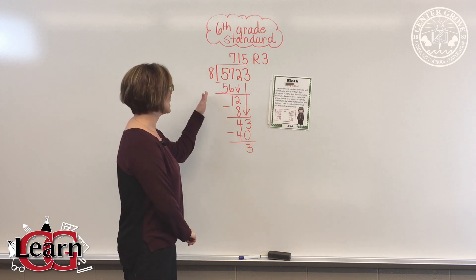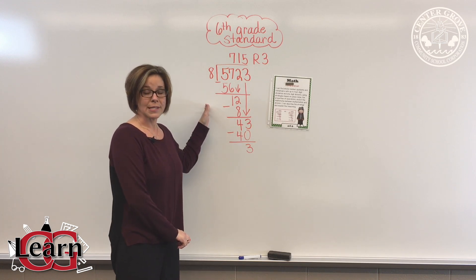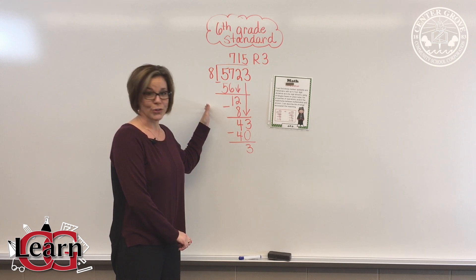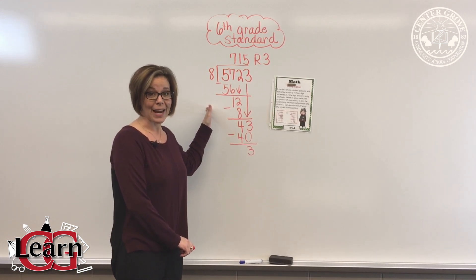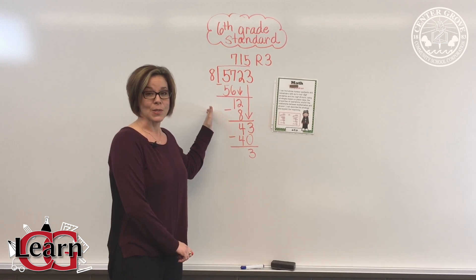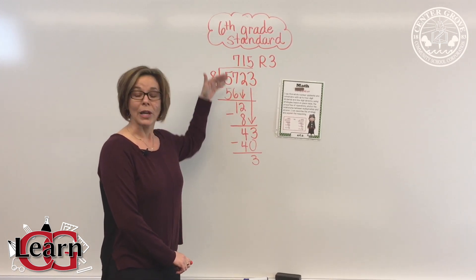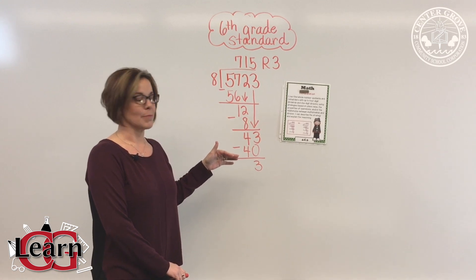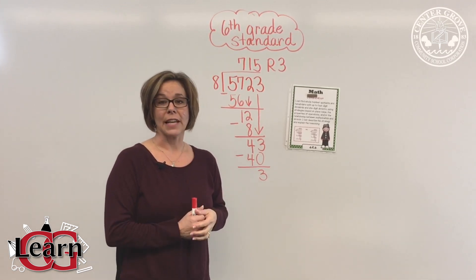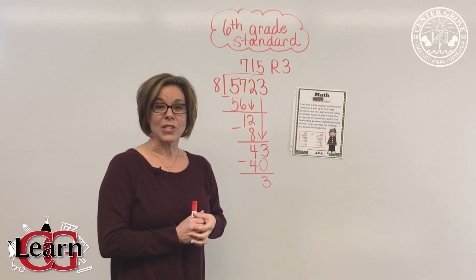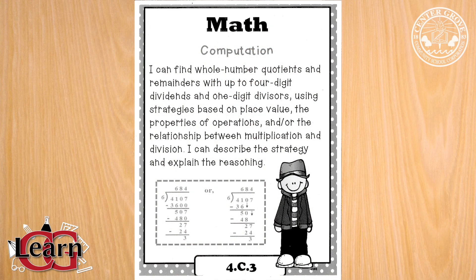In sixth grade, the standard is to use the standard algorithm. However, in fourth grade it is not, and I know that is different for you as it is different for me, because when I was taught long division we learned the standard algorithm. We need to start with a foundation, and that foundation is place value. Our standard in fourth grade is to find whole number quotients and remainders with up to four digit dividends and one digit divisors using strategies based on place value, and today I am going to teach you two strategies.